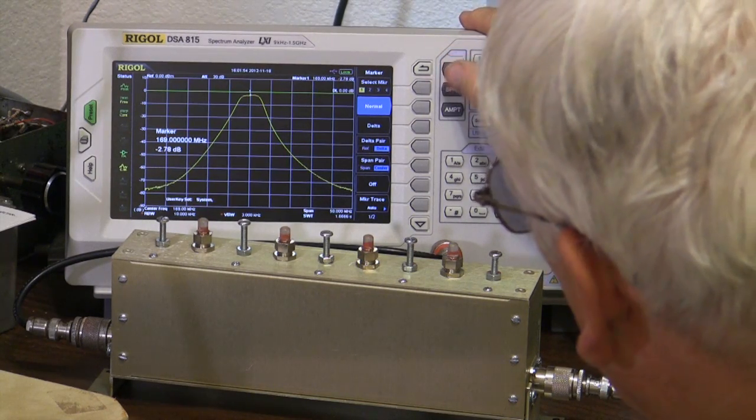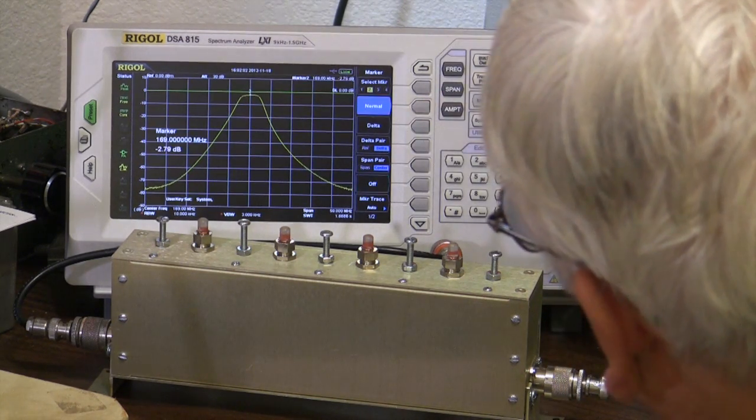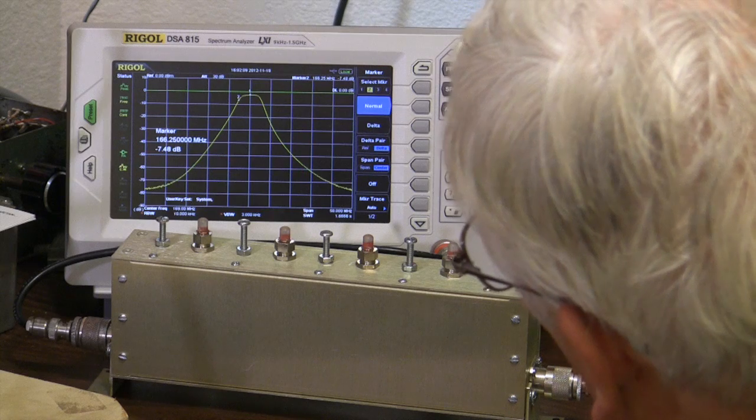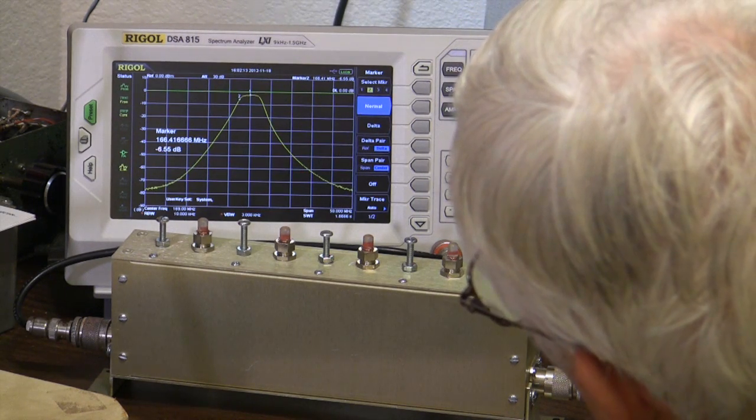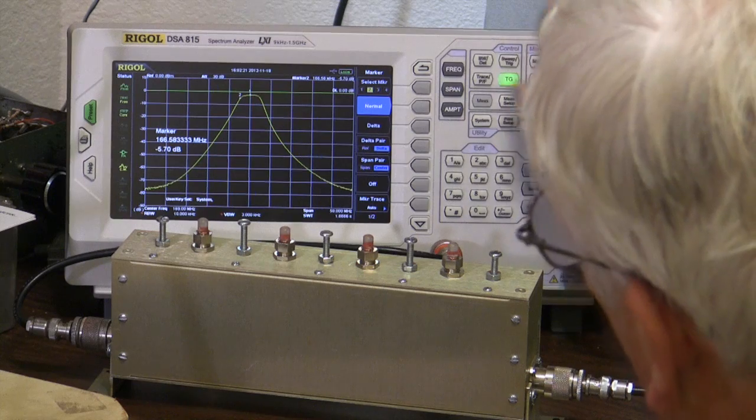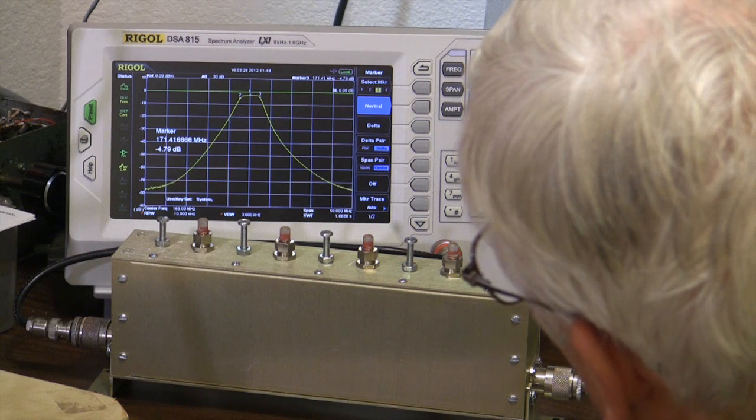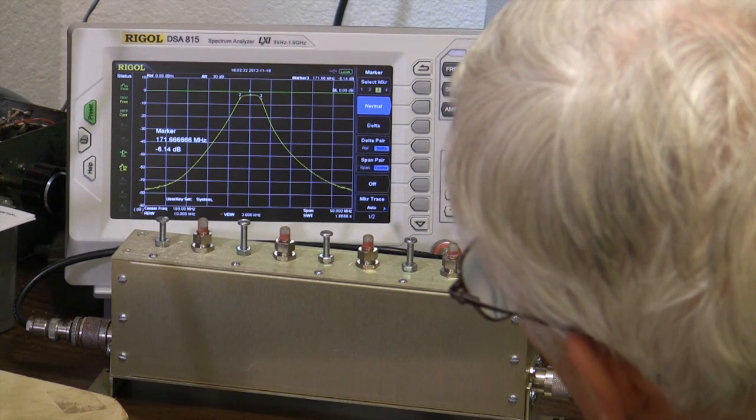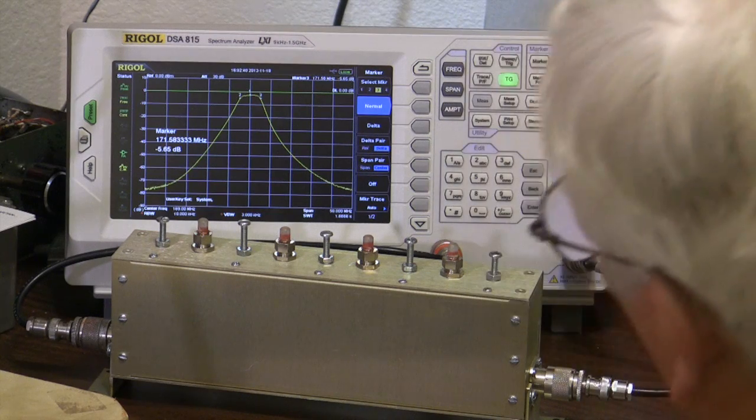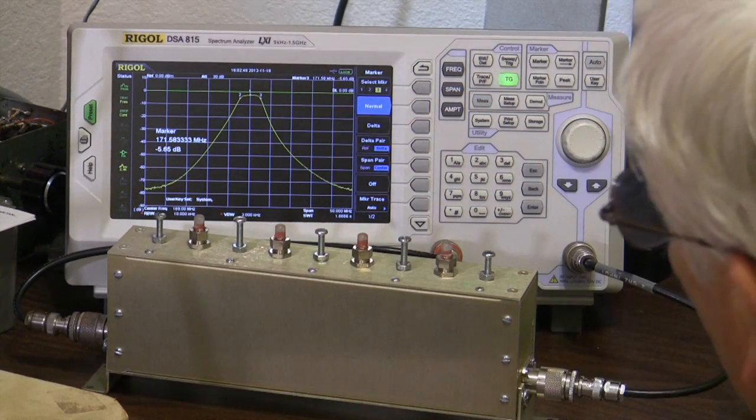All right. And let's go to marker 2. We'll find out what the lower edge of this thing is. Turn it on normal here, and we go from 2.7 to 5.7, which would be 3 dB. So there's our 3 dB, a lower marker at 166,583. Our upper marker will make marker 3. And 5.7, well, that's close enough. There is a slight tilt here.